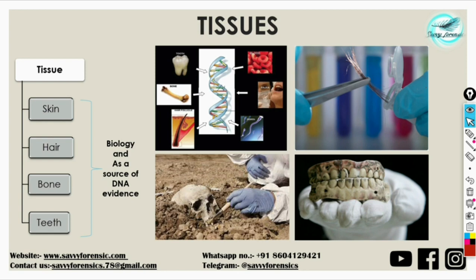We have to study about four basic structures: the skin, the hair, bone and teeth, and how they act as a potential source of biological evidence. From the forensic point of view, these four tissues are very important. We will be studying in detail about their biology as well as how they act as source of DNA evidence.